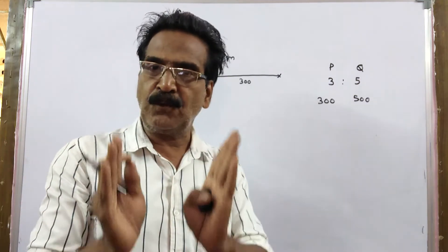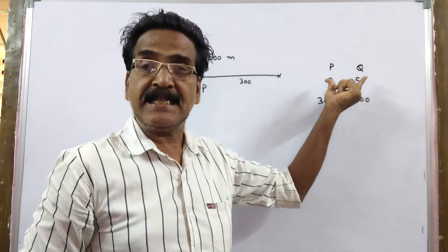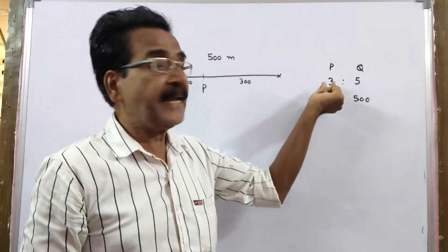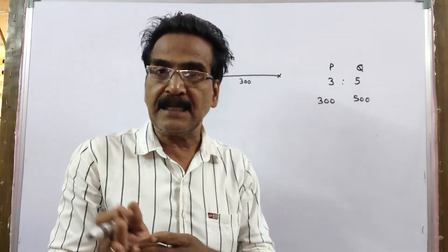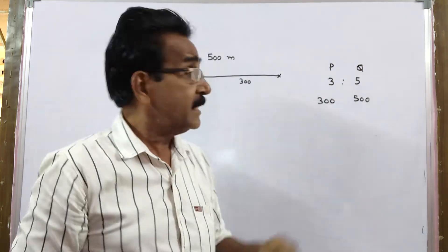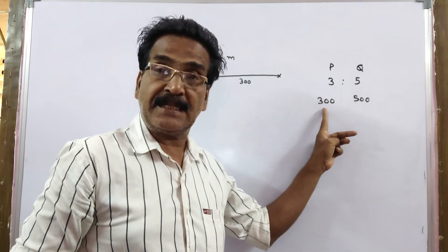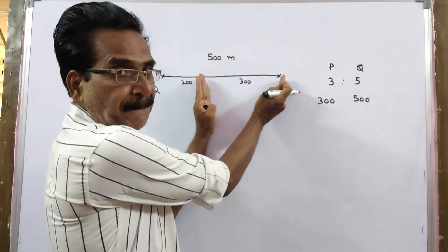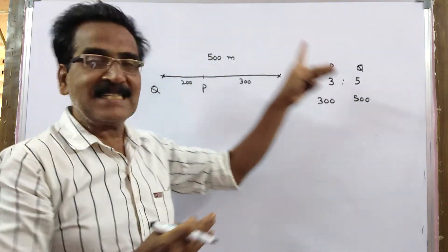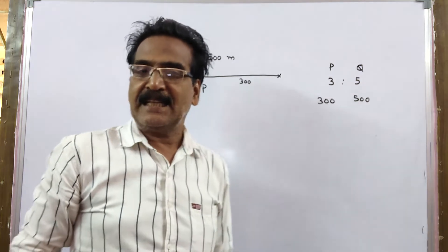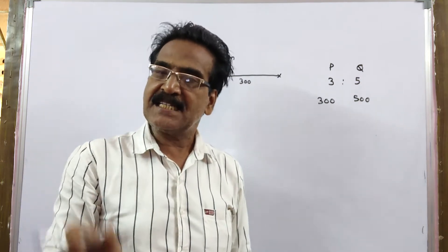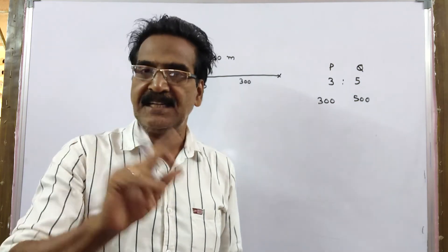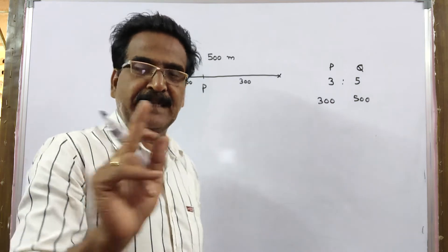Now P has to run only 300 meters. The ratio of speeds is 3 is to 5, meaning if P runs 3 meters, Q runs 5 meters. So in the time P runs 300 meters, Q runs 500 meters. That means both P and Q will reach at the same time — there will be no distance between P and Q at the finish of the race.